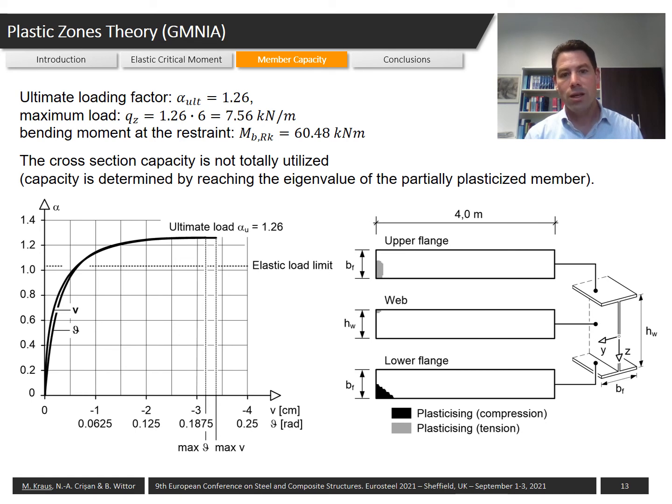The limit state is reached due to the fact that the critical loading factor, the eigenvalue of the system, considering the partially plasticized member reaches the value of 1.0, and it determines the capacity of the structural member.